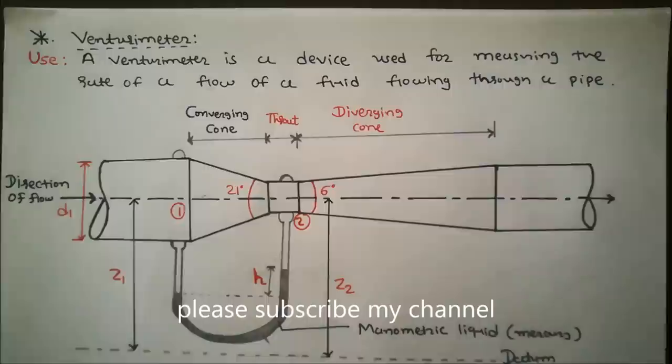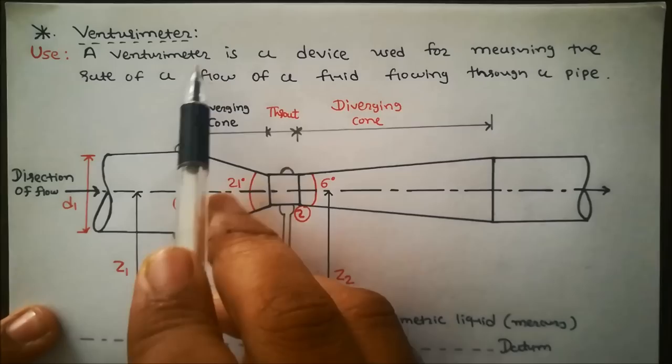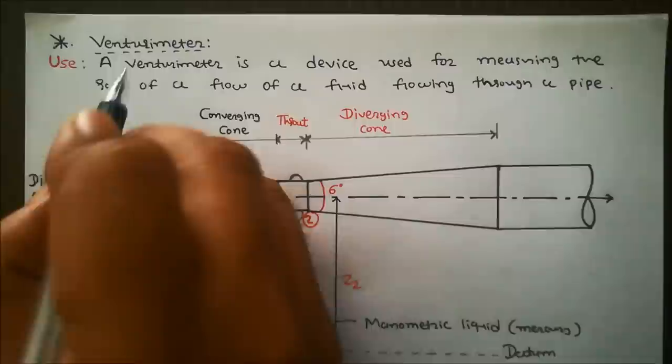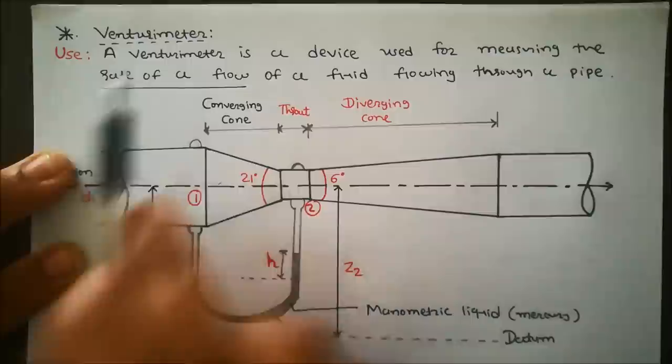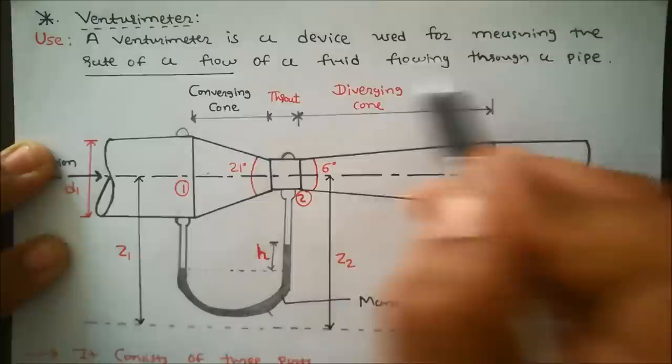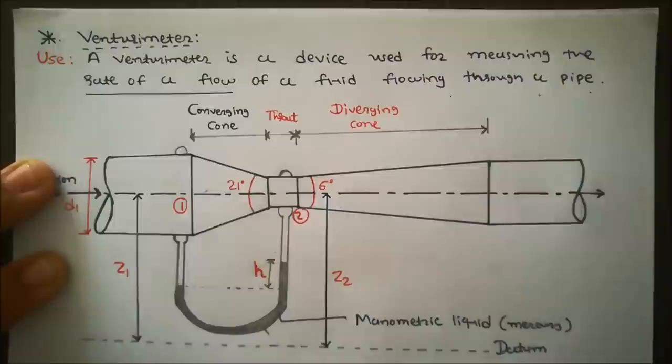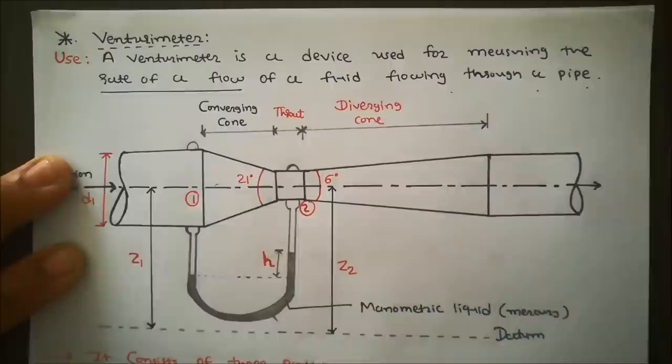Hello friends, today we discuss about Venturimeter. First, what is the use of Venturimeter? Venturimeter is a device used for measuring the rate of flow. Rate of flow means discharge. Venturimeter is basically a device used for measuring the rate of a fluid flowing through a pipe.